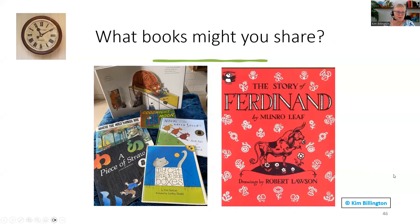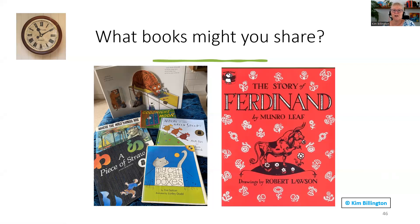Reading books is such a great activity with children under seven. Here's a selection I'd recommend: Ferdinand, Where's the Green Sheep, The Tiger Who Came to Tea, Where the Wild Things Are, Good Night Moon, My Cat Likes to Hide in Boxes. They've got to be quite short, and you can say: it's nearly the end of the session — I'm going to read you a book. Children really like that.